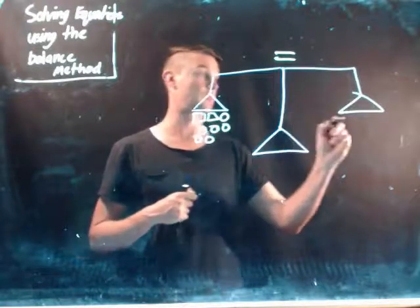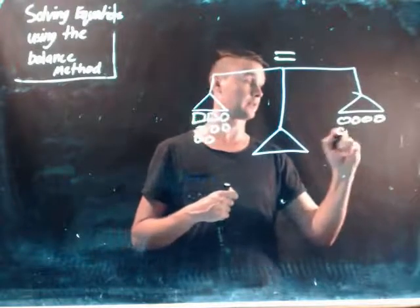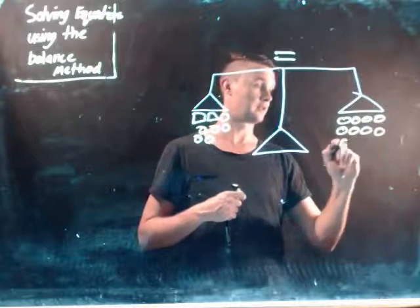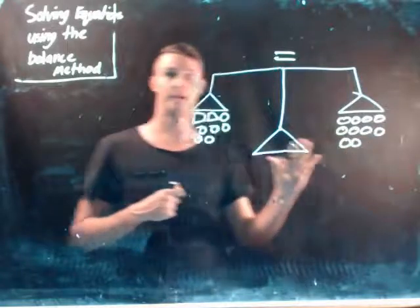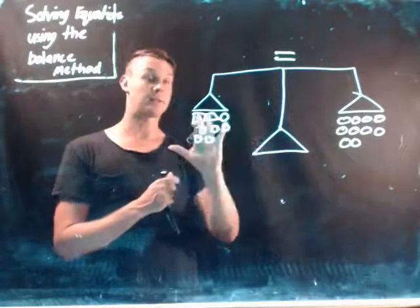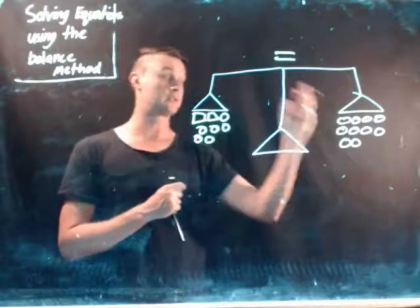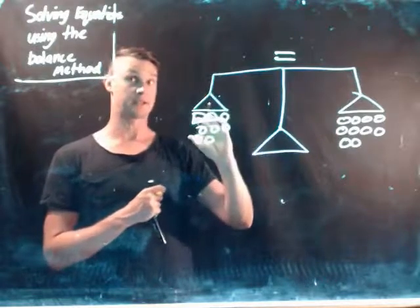And then on this side we just had like lollies, let's say about ten lollies. Now what we wanted to do is work out how many lollies are the same as a biscuit.